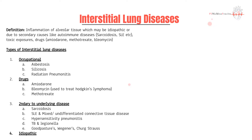The few main ones you need to know: asbestosis and silicosis are often miner's occupational hazards. The drugs amiodarone, a common antiarrhythmic, bleomycin — a chemotherapy drug typically used for Hodgkin's lymphoma — and methotrexate, all can lead to interstitial lung disease. Important underlying diseases that can cause interstitial fibrosis include sarcoidosis, SLE, other connective tissue diseases, as well as TB and lesion.